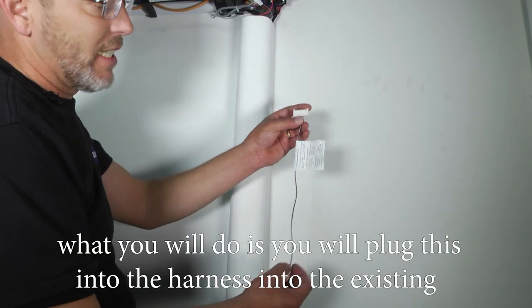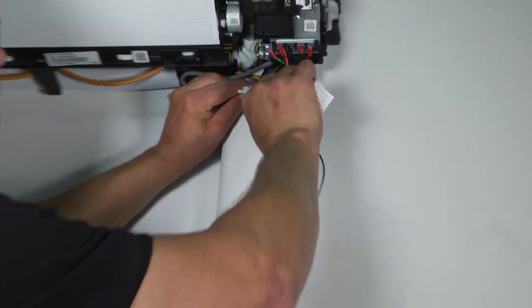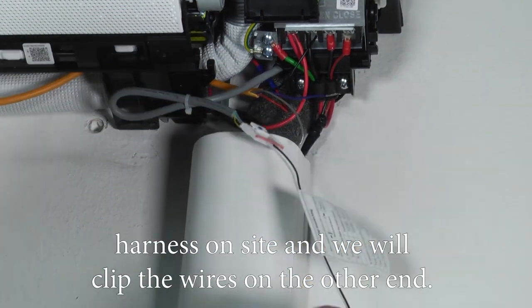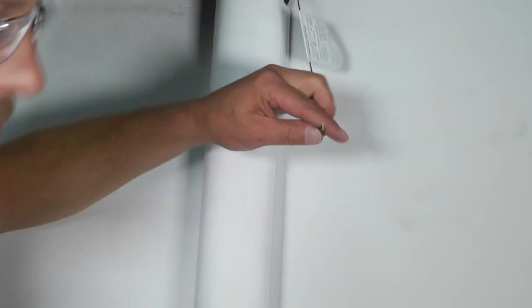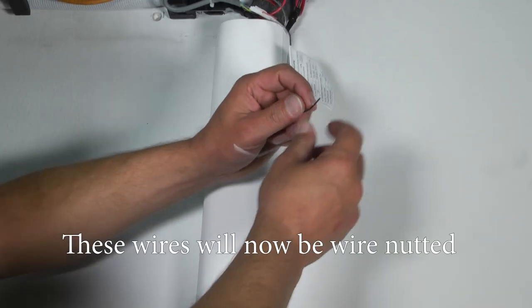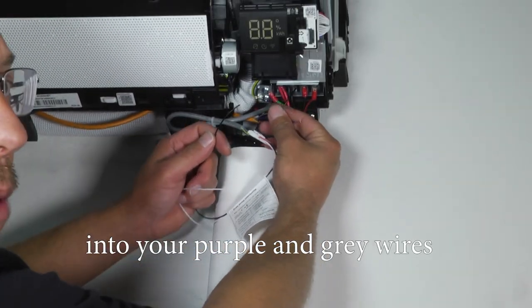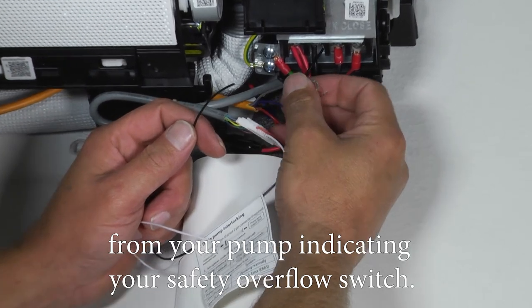what you'll do is you'll plug this into the harness, into the existing harness on site, and we'll clip the wires on the other end. These wires will now be wire nutted into your purple and gray wires from your pump, indicating your safety overflow switch.